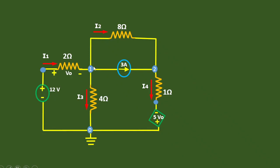This is node 1 in which we have the V1 potential available, and this is at V2 potential. This 12 volts will be existing here, and here we will be having minus 5V0.